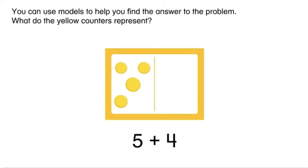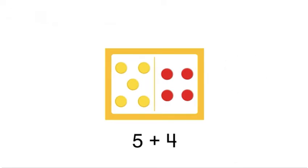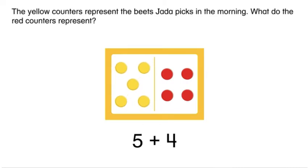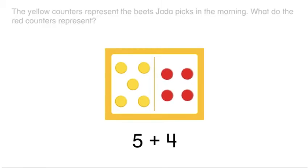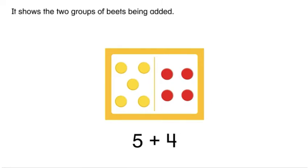You can use models to help you find the answer to the problem. What do the yellow counters represent? The yellow counters represent the beets Jada picks in the morning. What do the red counters represent? The red counters represent the beets Jada picks in the afternoon. What does five plus four show? It shows the two groups of beets being added.